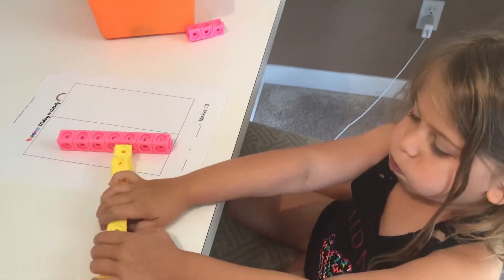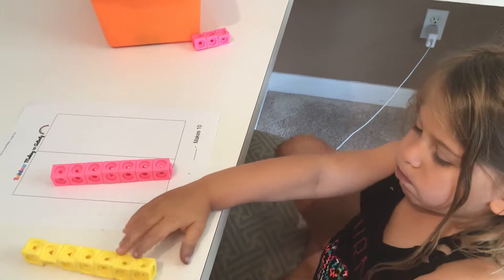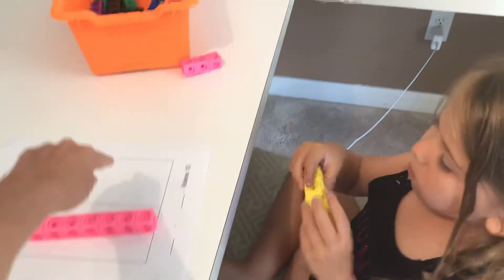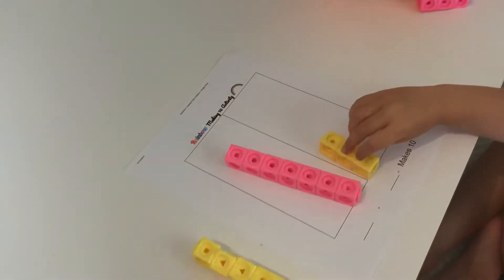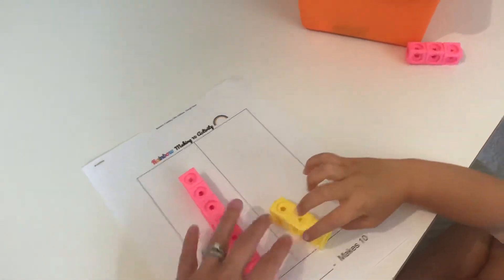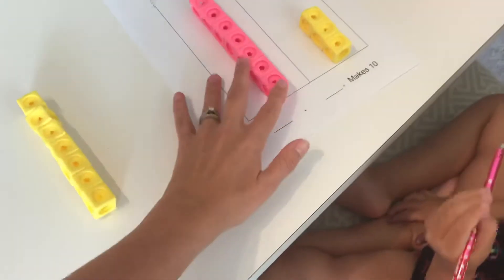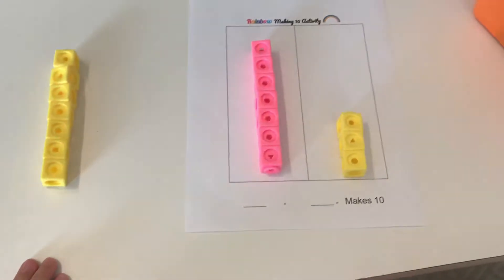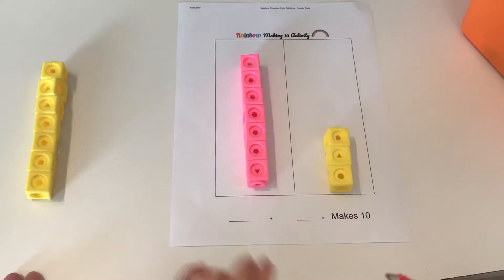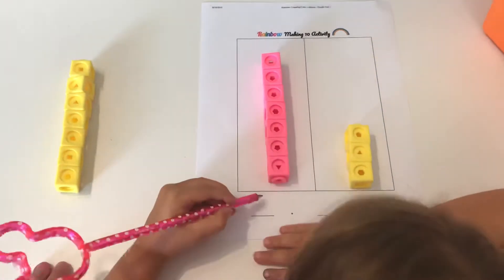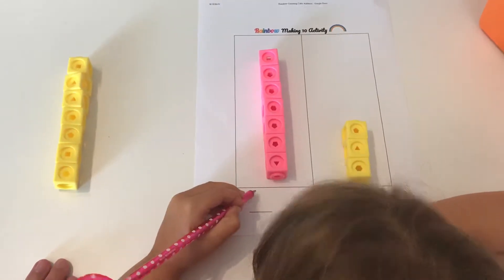Good job, and place that right there on the board. Perfect. We're gonna write that equation out here. How many pink blocks did you have? Seven. Can you write the number seven there? Use your other hand sweetie because you're right-handed.